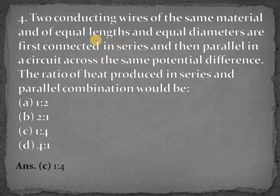Hello everyone, let's start with question number 4. In this problem, two conducting wires of the same material and of equal lengths and equal diameters are first connected in series, then parallel in a circuit across the same potential difference. So we have two different circuits.